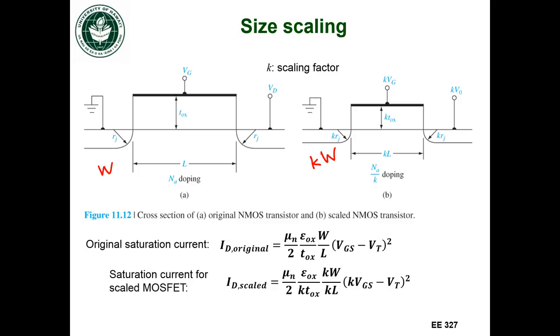And if I scale it, this is what it's going to look like. The mobility doesn't scale, the permittivity doesn't scale, but the oxide thickness we made it K times the oxide thickness, so there's a K there. The width scales, there's a K there. The length scales, there's a K there.